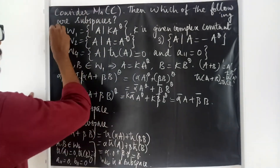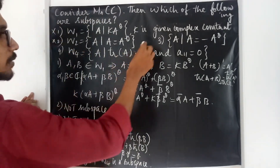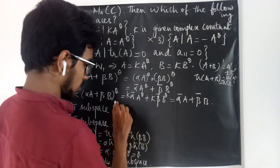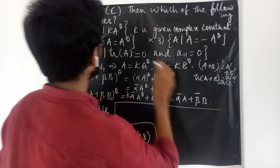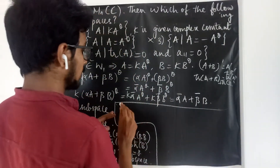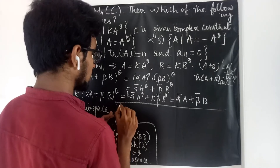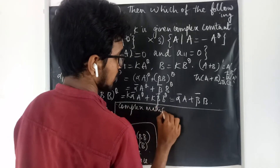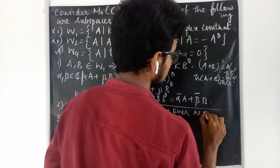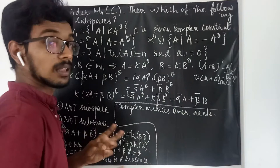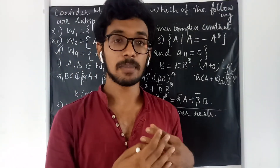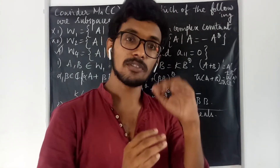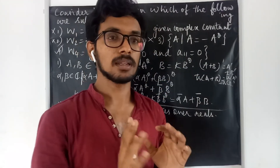So among the four sets, W1, W2, and W3 are not subspaces, and only W4 is a subspace when considered over the field of complex numbers.